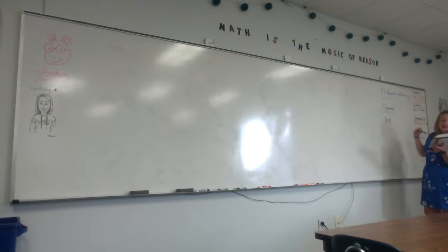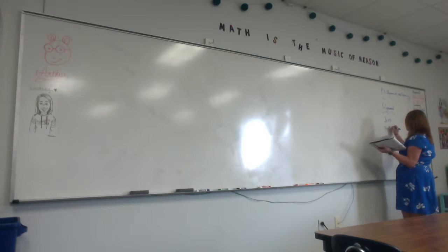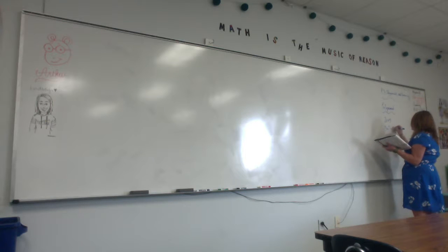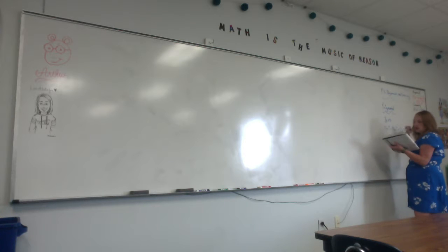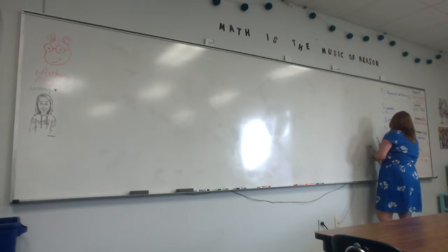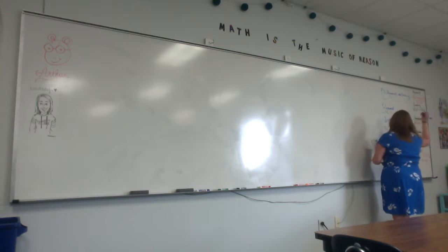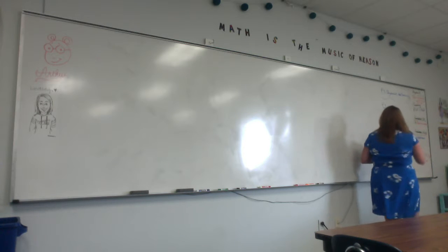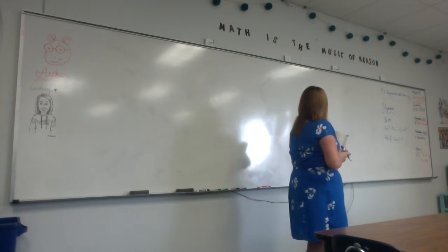2x plus 5, anything with roots, or like 3x to the 4th minus 7x squared plus 2x plus 4 — that's a polynomial. Things with x's and y's: 6x squared y cubed minus 2xy plus 7 are all polynomials. We can graph polynomials.